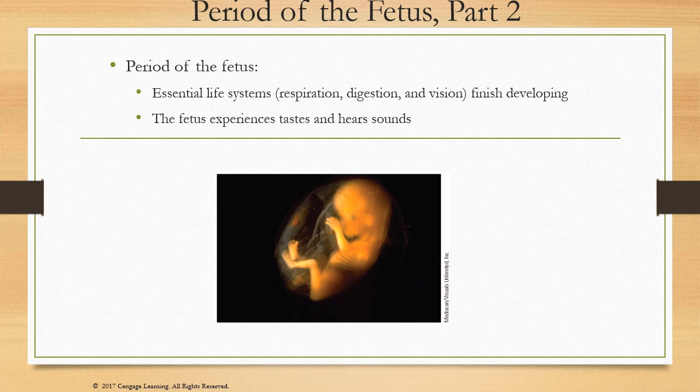A premature baby is generally considered to be born around 26 weeks. At that point the lungs don't have enough surfactant to keep them open, resulting in difficulty breathing and extended NICU stays. At 22 to 28 weeks after conception, the fetus has achieved the age of viability — that's a key point to remember.